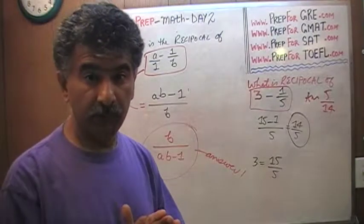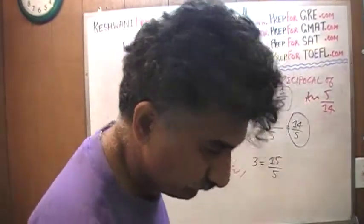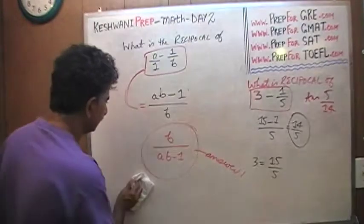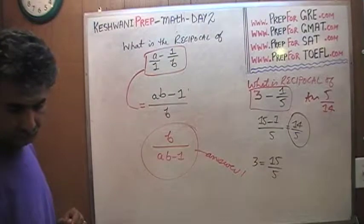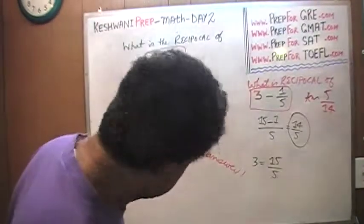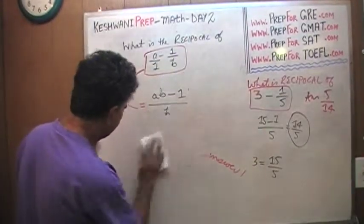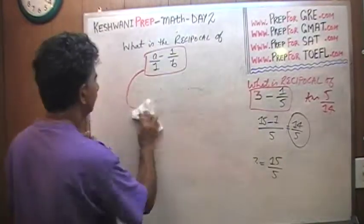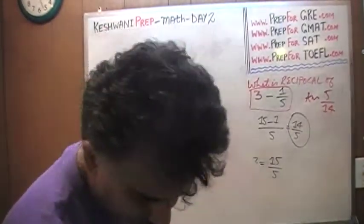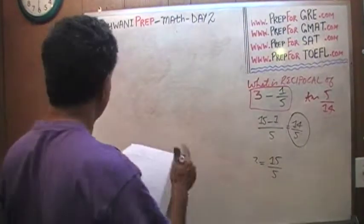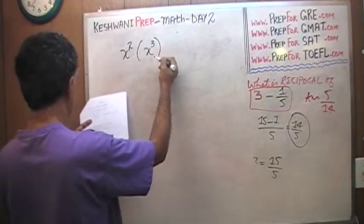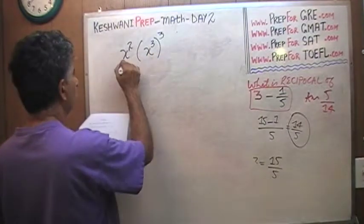Do you want to do one more problem? All right, let's do one more. Very quickly then — how much is this quantity: x squared times x cubed, the whole thing raised to the third power, over x to the fifth?